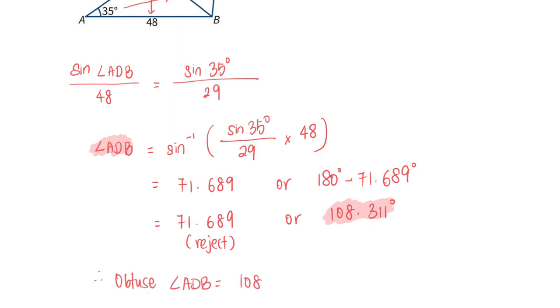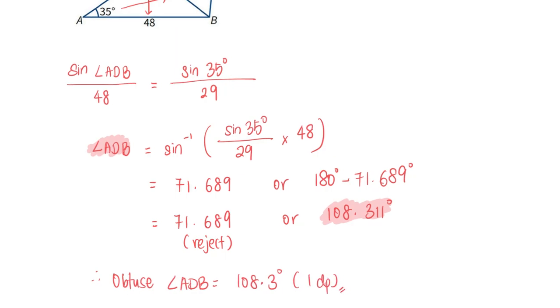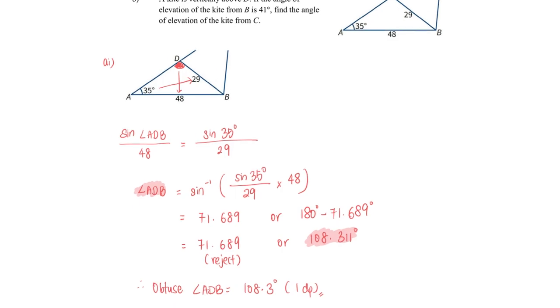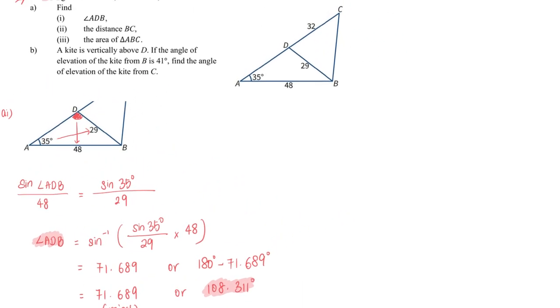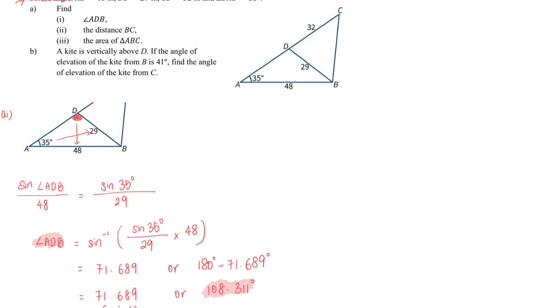Angle ADB is equal to 108.3 degrees to one decimal place. That's the first part of this question. Next question: find the distance BC.